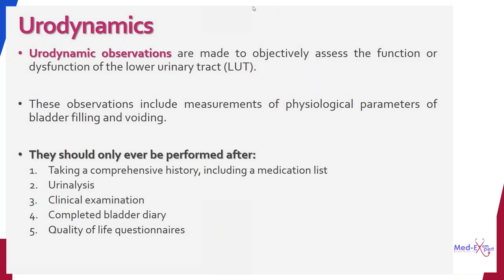What are urodynamic observations? Before, they were called urodynamic investigations, but now they are called urodynamic observations because they are just observations made by certain tests. Urodynamic observations are made to objectively assess the function or dysfunction of the lower urinary tract — mainly the bladder and the urethral sphincter — and these observations include measurements of physiological parameters of bladder filling and voiding.